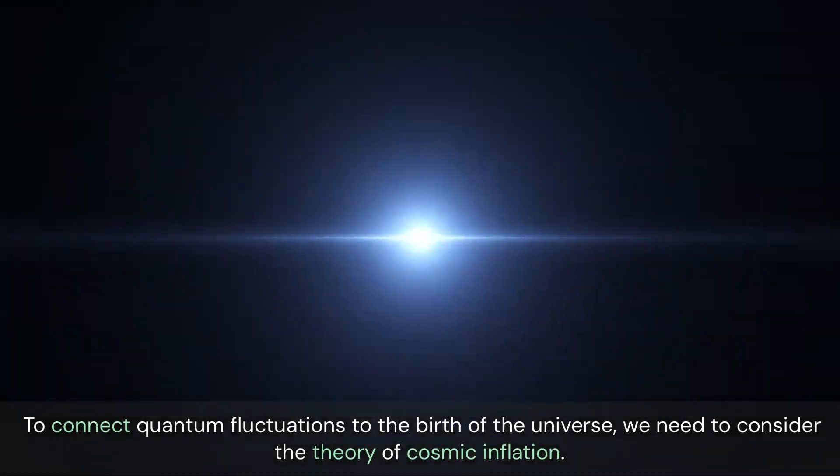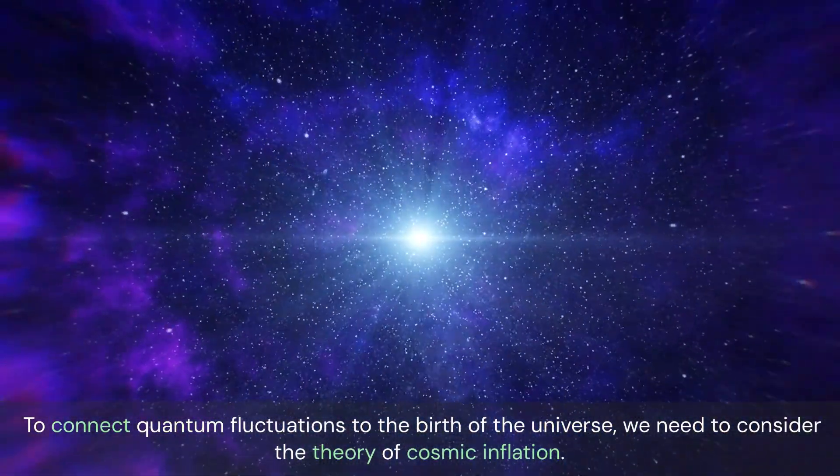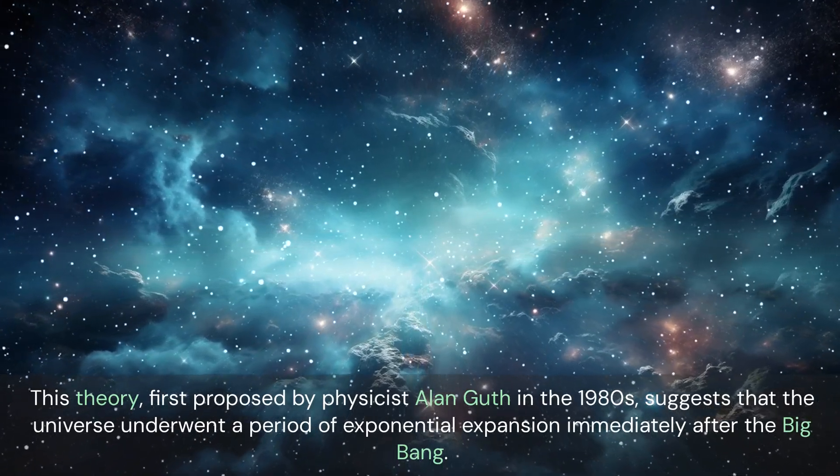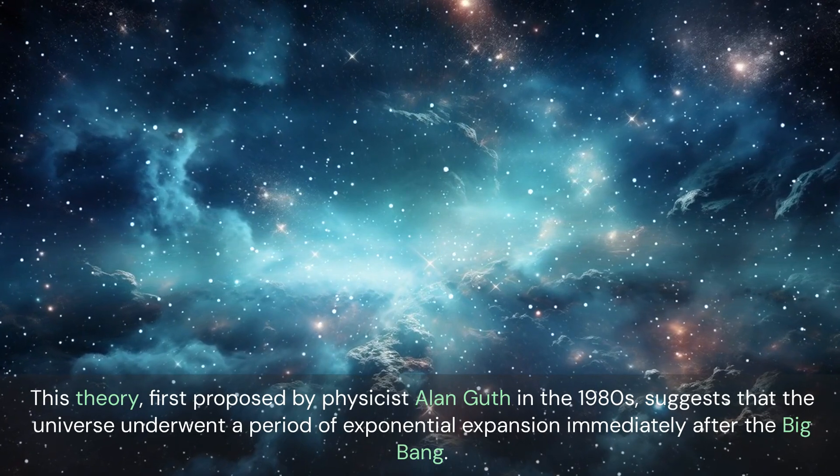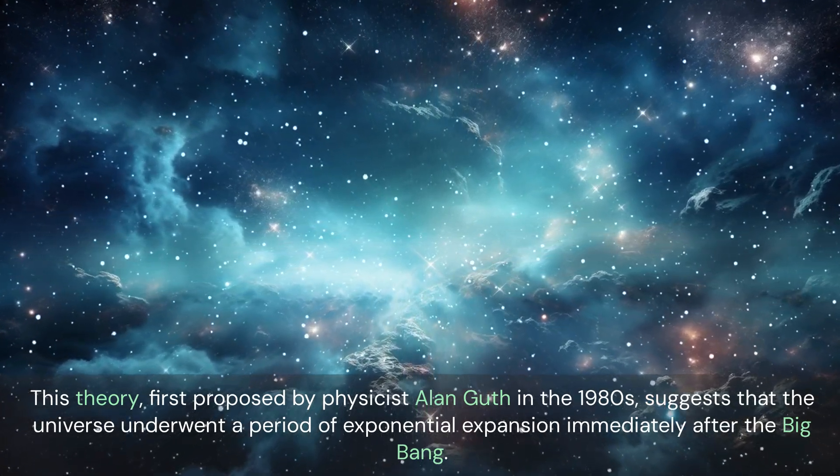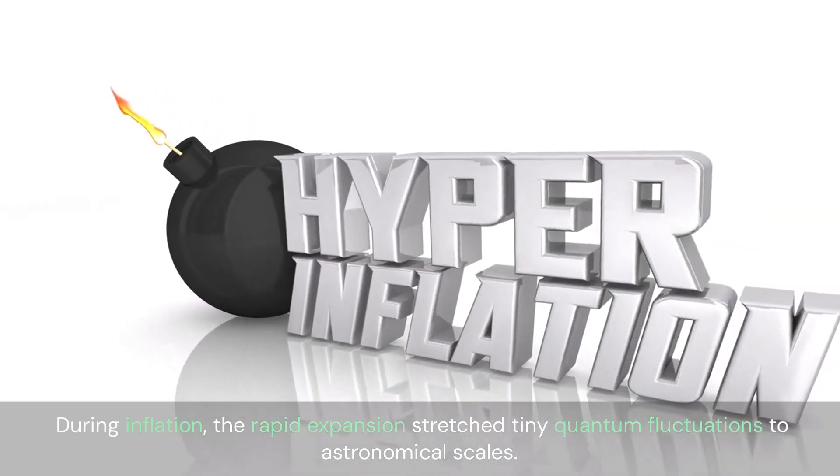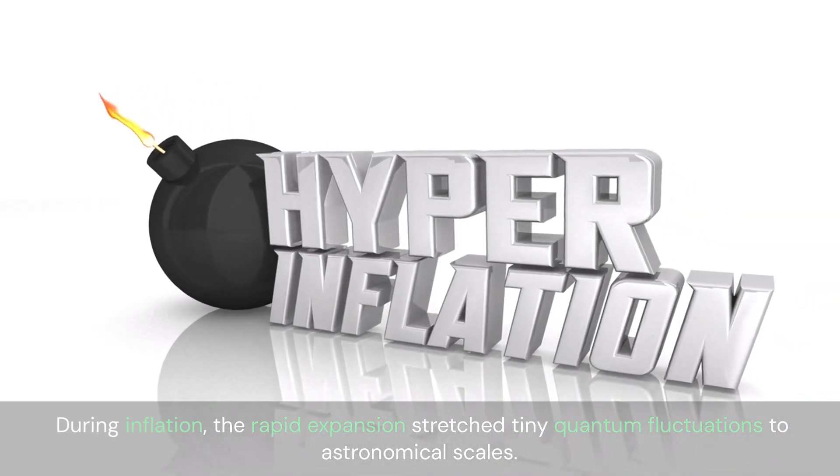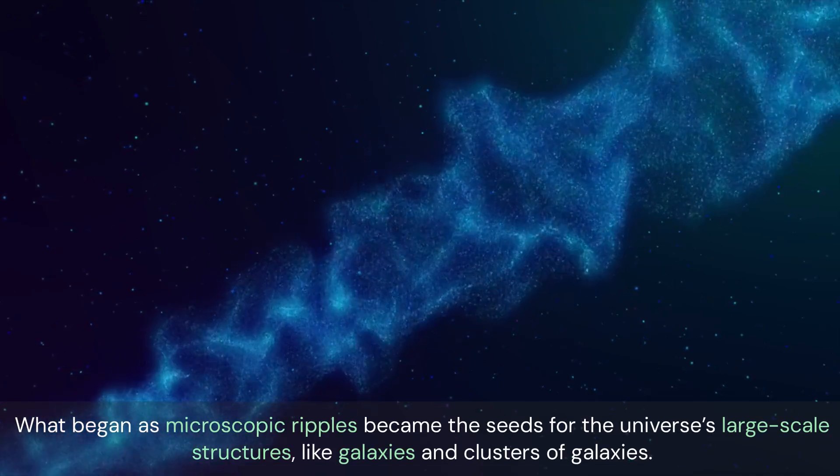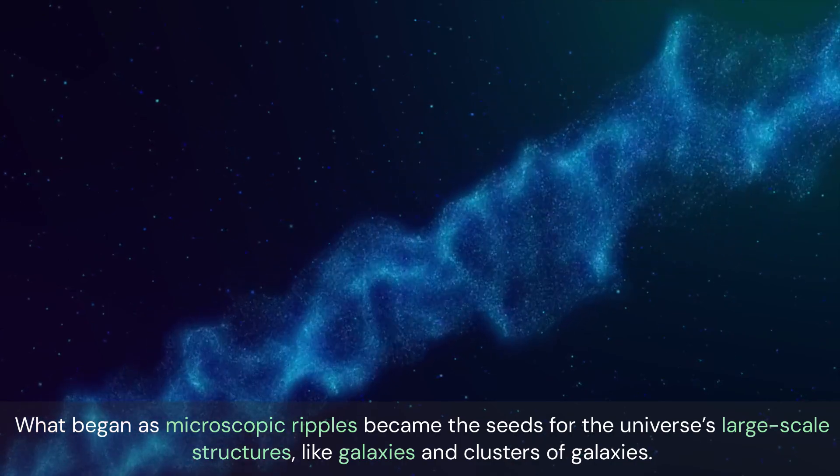To connect quantum fluctuations to the birth of the universe, we need to consider the theory of cosmic inflation. This theory, first proposed by physicist Alan Guth in the 1980s, suggests that the universe underwent a period of exponential expansion immediately after the Big Bang. During inflation, the rapid expansion stretched tiny quantum fluctuations to astronomical scales. What began as microscopic ripples became the seeds for the universe's large-scale structures, like galaxies and clusters of galaxies.